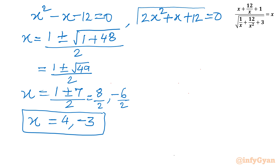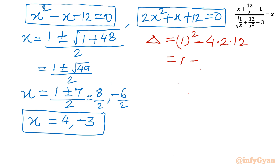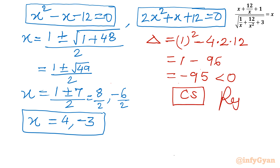Now let us consider the second quadratic equation: 2x squared plus x plus 12 equals 0. I will only check the discriminant to see whether it produces real or complex solutions. The discriminant is b squared minus 4ac equals 1 squared minus 4 times 2 times 12, which is 1 minus 96, giving negative 95. This value is negative, so complex solutions will be generated. Since we are looking only for real solutions, we reject this equation.